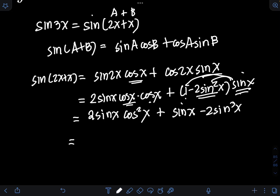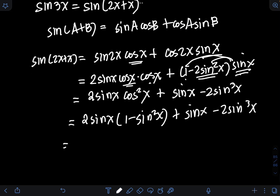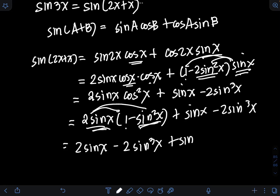To express everything in terms of sinx, apply the Pythagorean identity: cos²x = 1 − sin²x. Substituting gives 2sinx·(1 − sin²x) + sinx − 2sin³x, which expands to 2sinx − 2sin³x + sinx − 2sin³x.